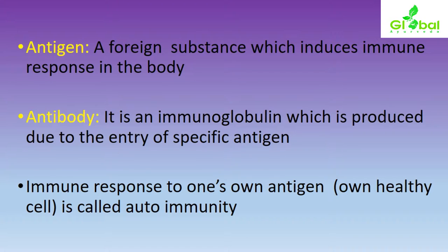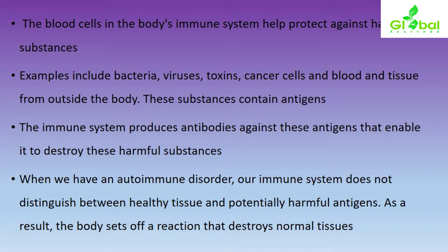Immune response to one's own antigen — reaction against one's own healthy cells — is called autoimmunity, or self-immunity. The blood cells in the body's immune system help protect against harmful substances. The blood cells act as protecting barriers against harmful substances like bacteria, viruses, toxins, cancer cells, and blood and tissue from outside the body.